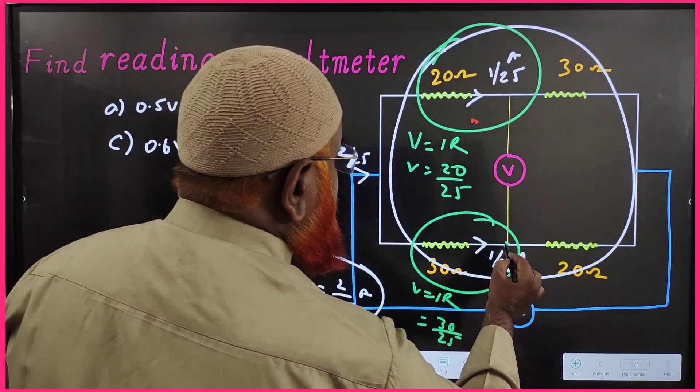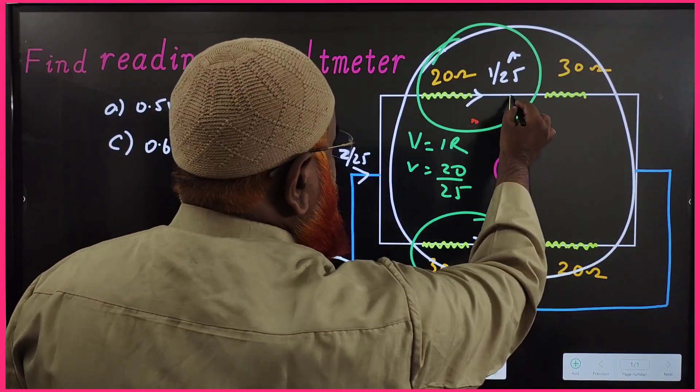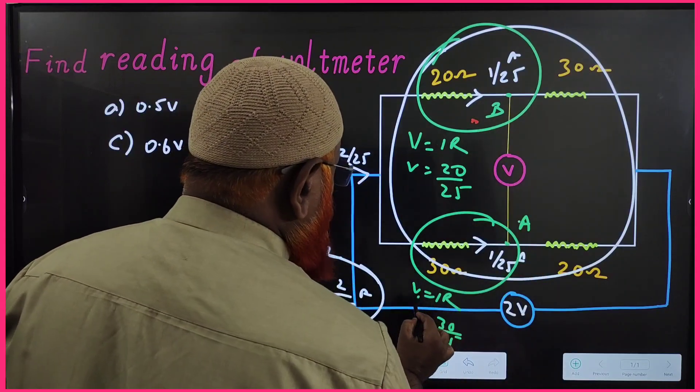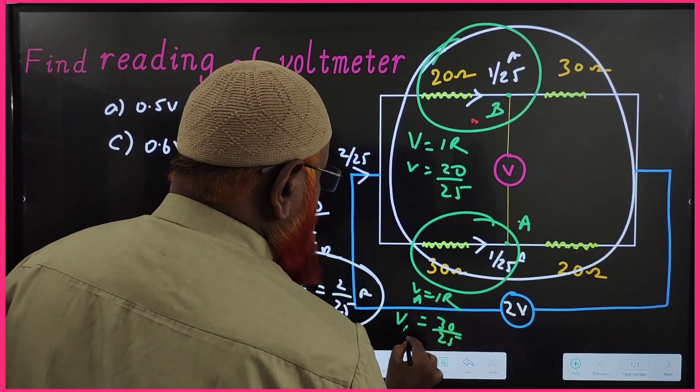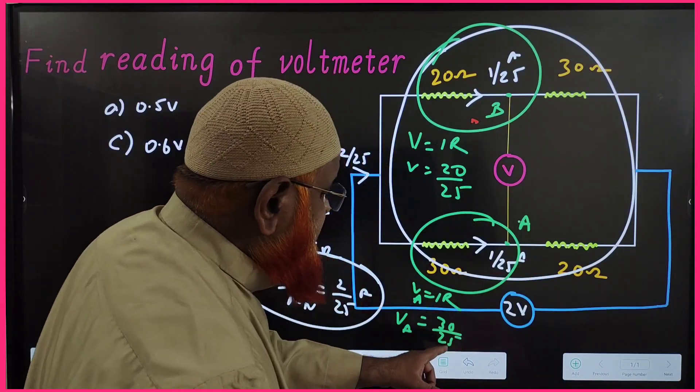So this point, let us imagine it is A, let us take this as B. So VA at this place is 30 by 25. VB at this place is 20 by 25.